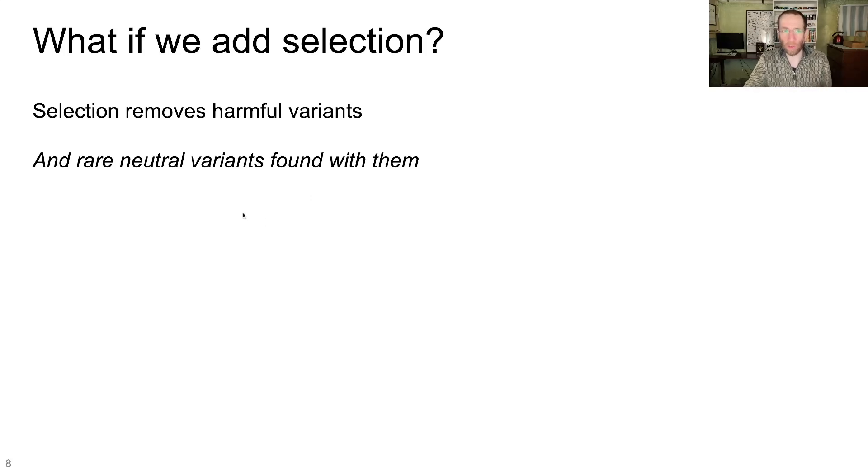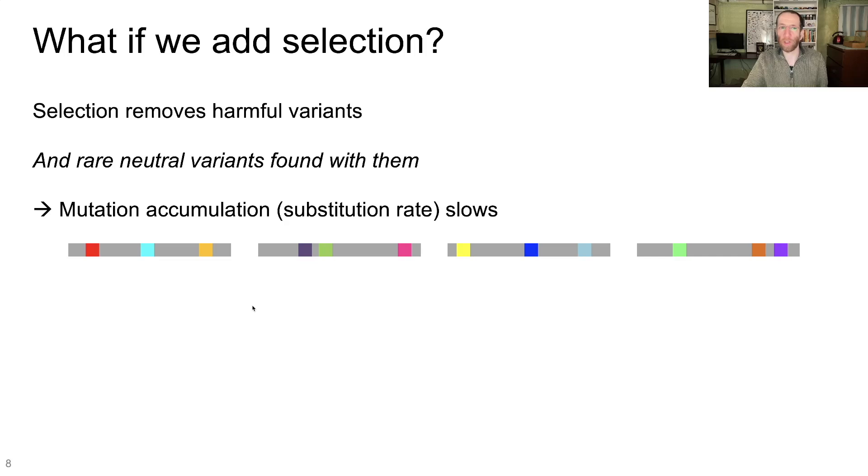So we can illustrate this graphically in a very simple representation here. Each of these gray bars represents a genome within our population. So we have three mutations within each of these genomes. Now let's just say that this purple mutation right here is harmful. So that mutation is going to get selected out of the population, meaning its frequency will ultimately be zero. It'll be gone.